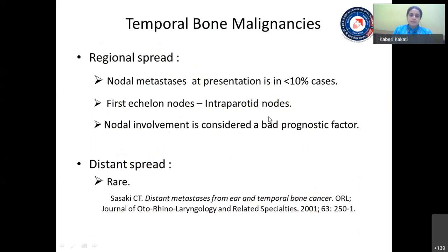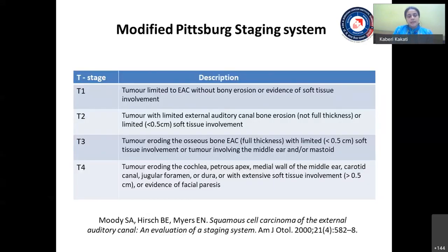Coming to regional spread, nodal metastasis at presentation is found to be below 10%, and the first echelon nodes are the intraparotid nodes. As in all head and neck cancers, nodal involvement is a bad prognostic factor — disease-free survival drops from almost 60% to 30% with nodal involvement. Distant spread is rare and if it occurs, it goes to the lung, bone, and liver. As there is no standard AJCC or UICC staging system for temporal bone tumors, we usually follow the modified Pittsburgh staging system put forward by Moody et al.